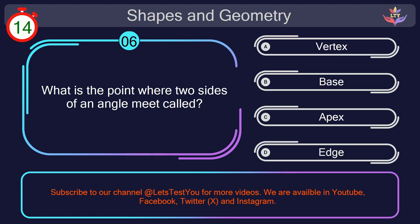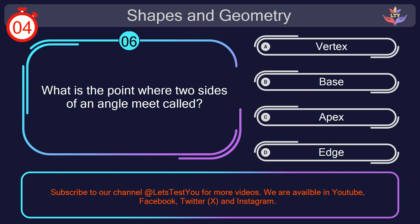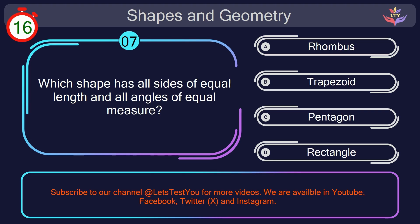Question number 6. What is the point where 2 sides of an angle meet called? Your countdown started. 1, here we go. The correct answer is option A. Vertex. The point where 2 sides of an angle meet is called the vertex.